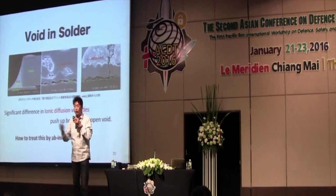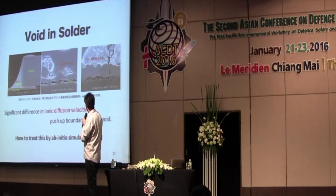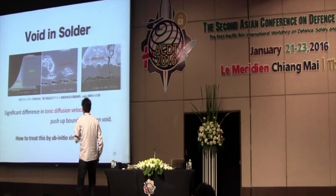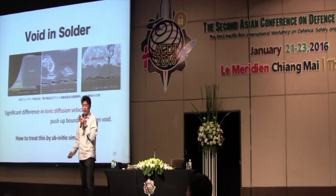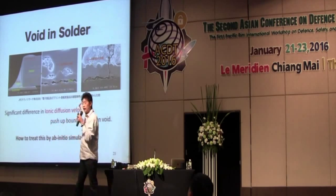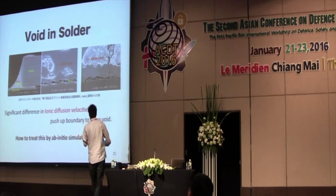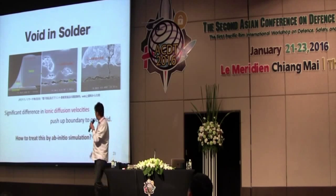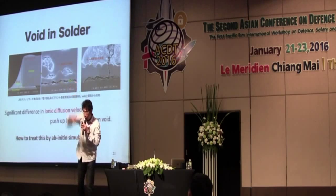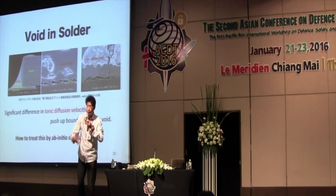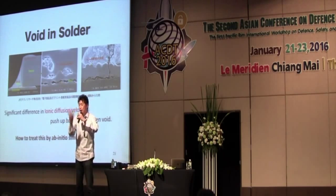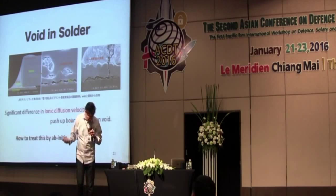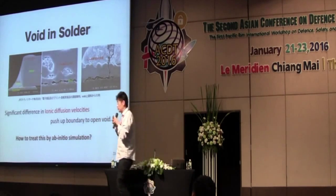I will explain an example of what nanomodeling is. This is a problem introduced by a collaborating company which fabricates semiconductor devices. The devices are put on the substrate by a solder, but many times the solder has a void — that is problematic and hard to control in terms of product quality. This is quite far from our zero-temperature ab initio situation. It is well known that such cracking is generated by a significant difference in the ionic diffusion velocity from upward to downward — such imbalance pushes up the interface and opens up a crack.